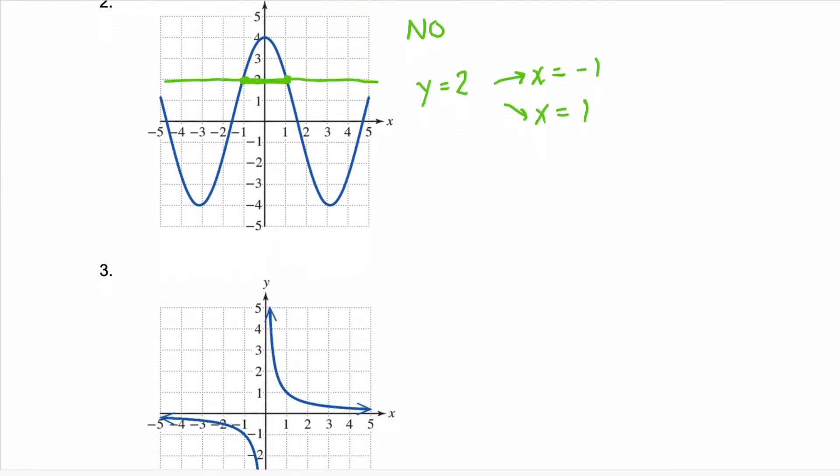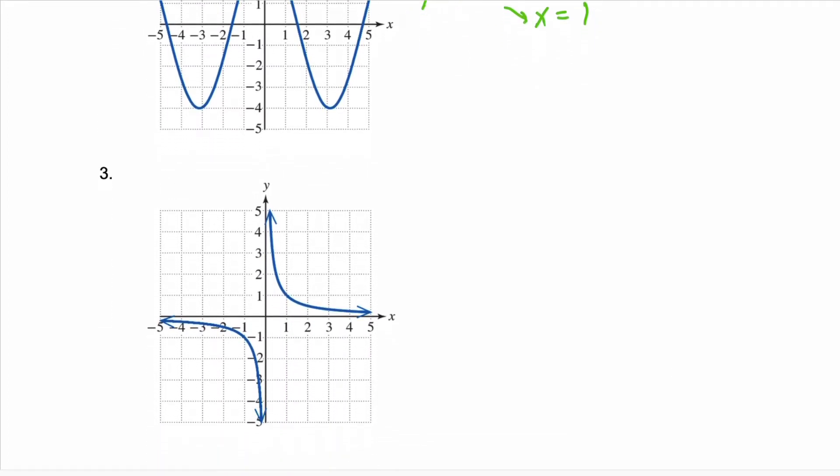Let's look at another graph. Here, we can draw a horizontal line, and notice that we intersect in only one point. Therefore, this graph is of a one-to-one function.